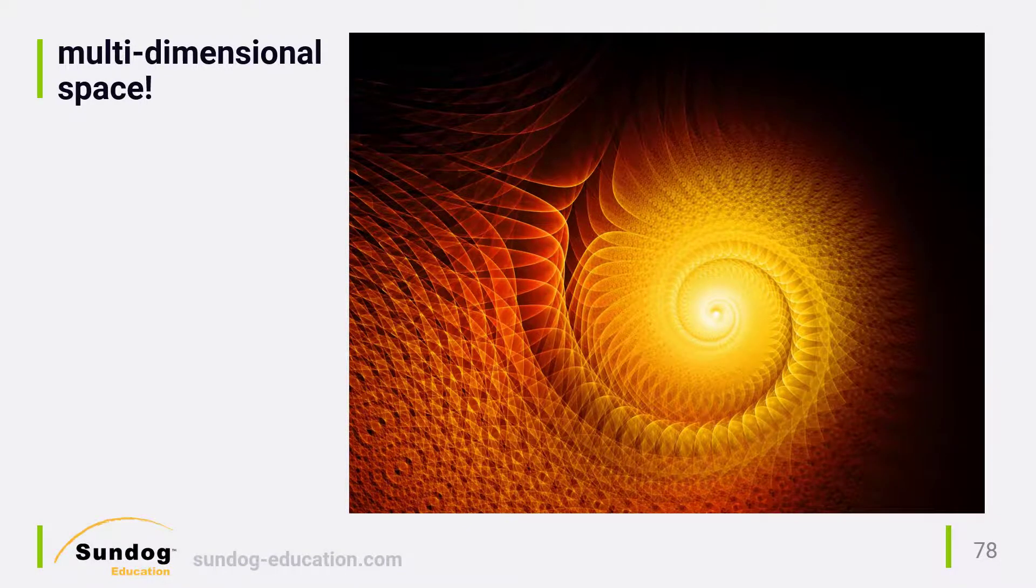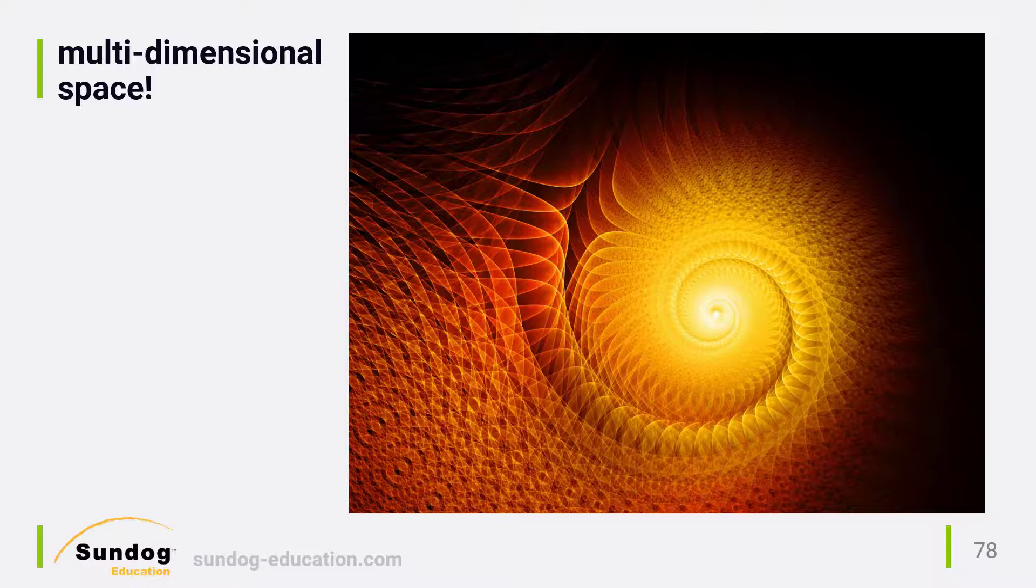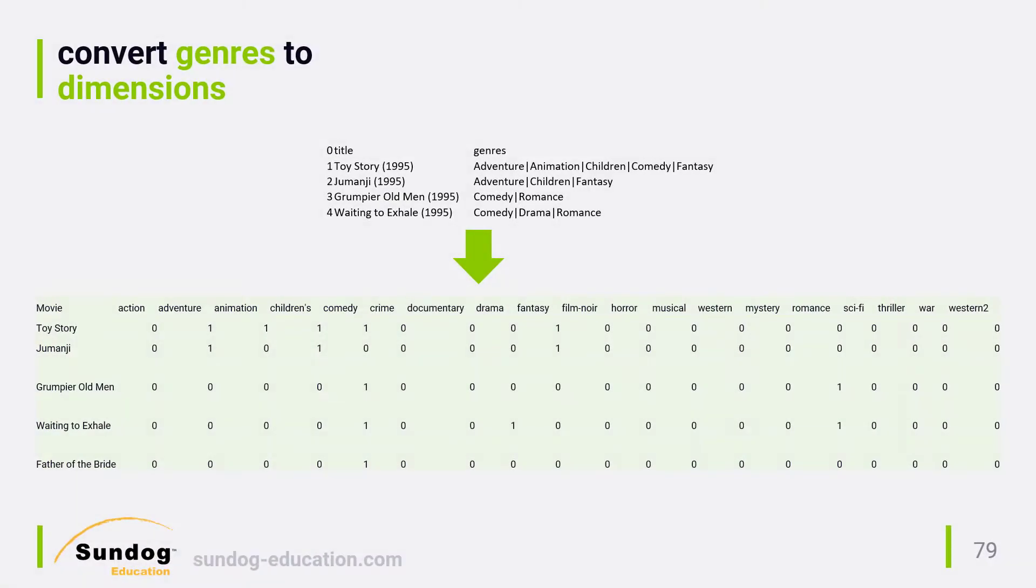So how do we scale this up to all 18 genres that we really have? Well, we have to think of each genre as a dimension on that plot. That's right, we need to find the angles between movies in 18-dimensional space, where every dimension represents a movie genre. There is no way you can actually picture this in your head, so don't even try. But the concept is exactly the same as it was in our 2-genre 2-dimensional space. We plot every movie's position in 18-dimensional space based on its genres, and figure out the cosine of the angles between each movie as a measure of their genre-based similarity to each other.